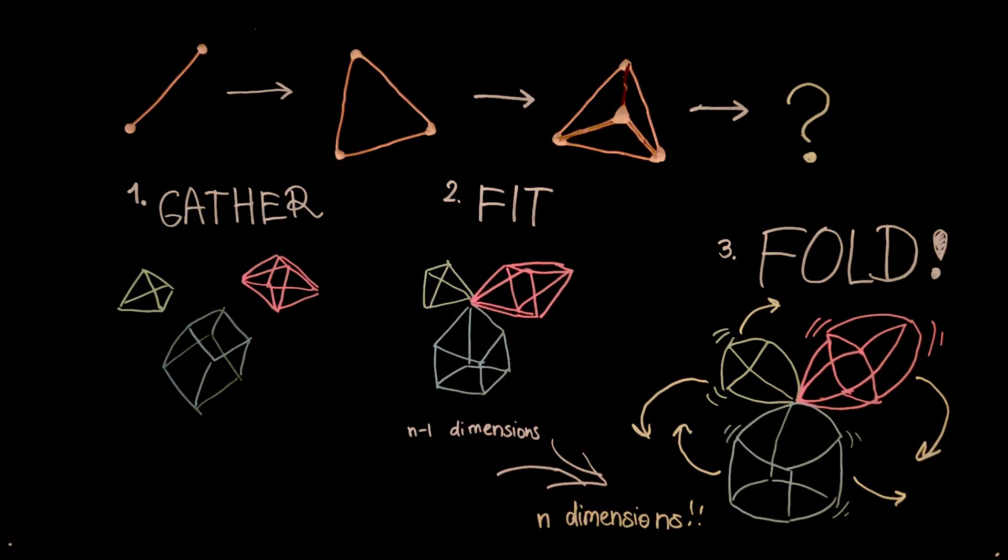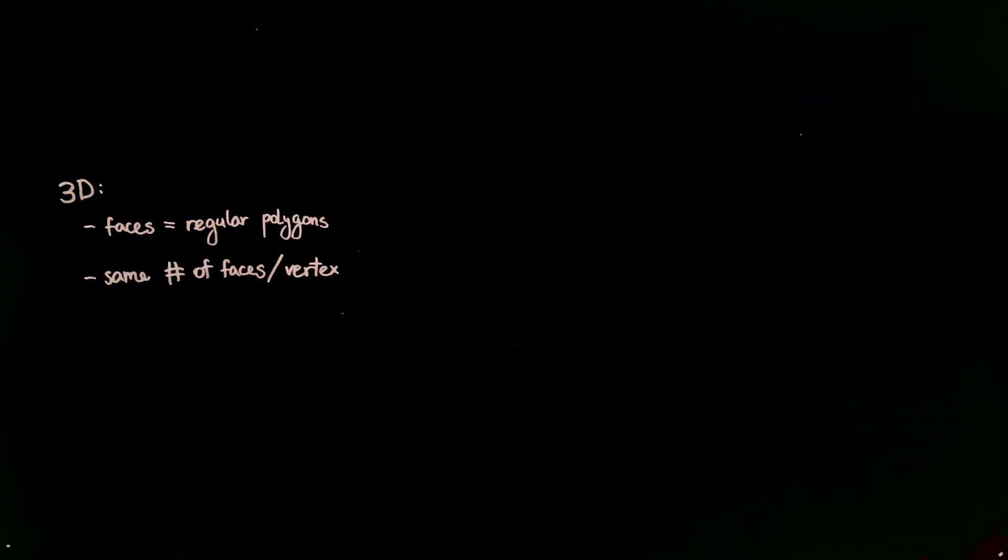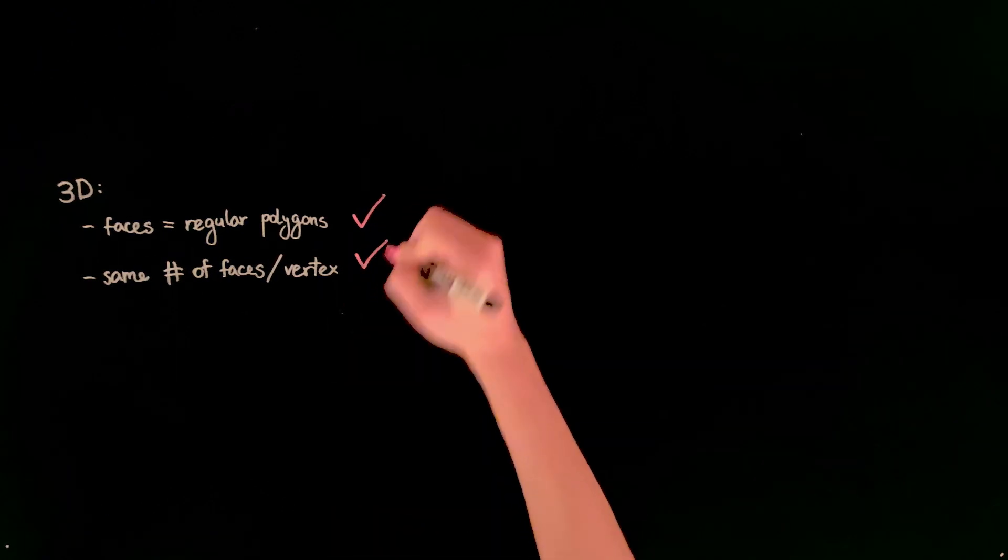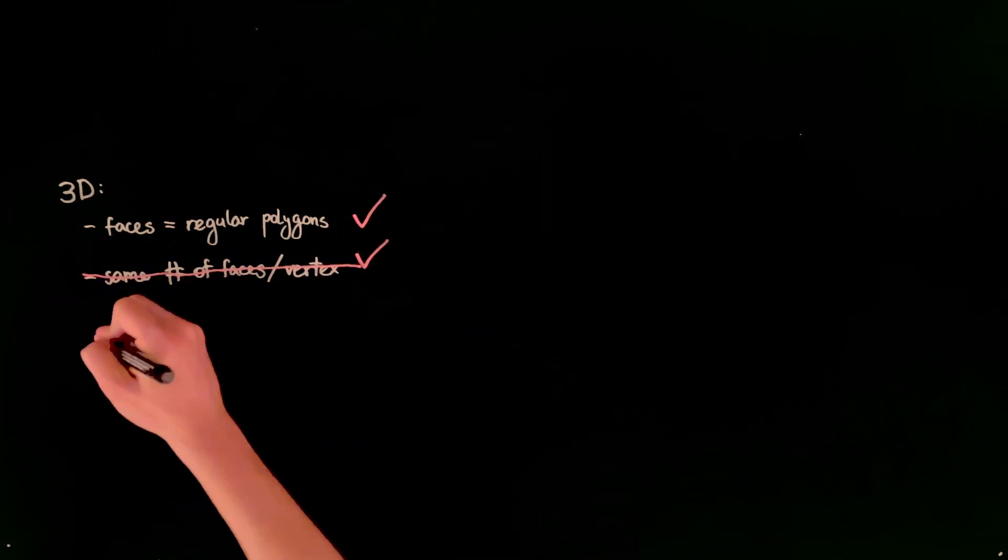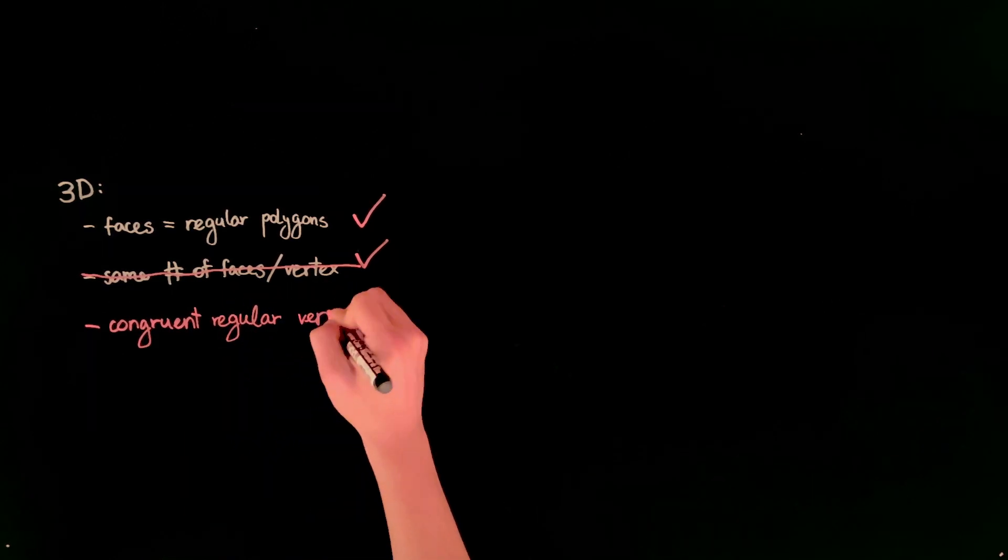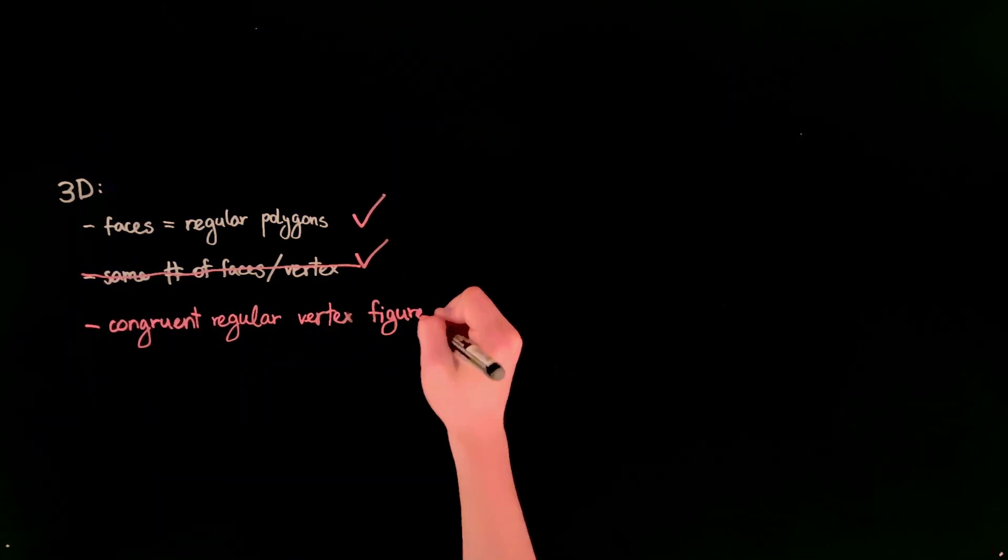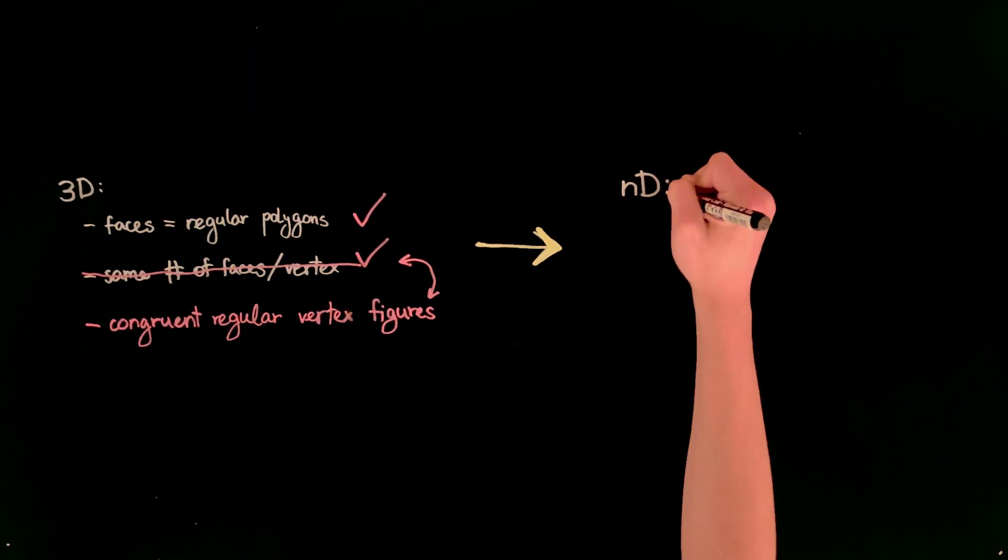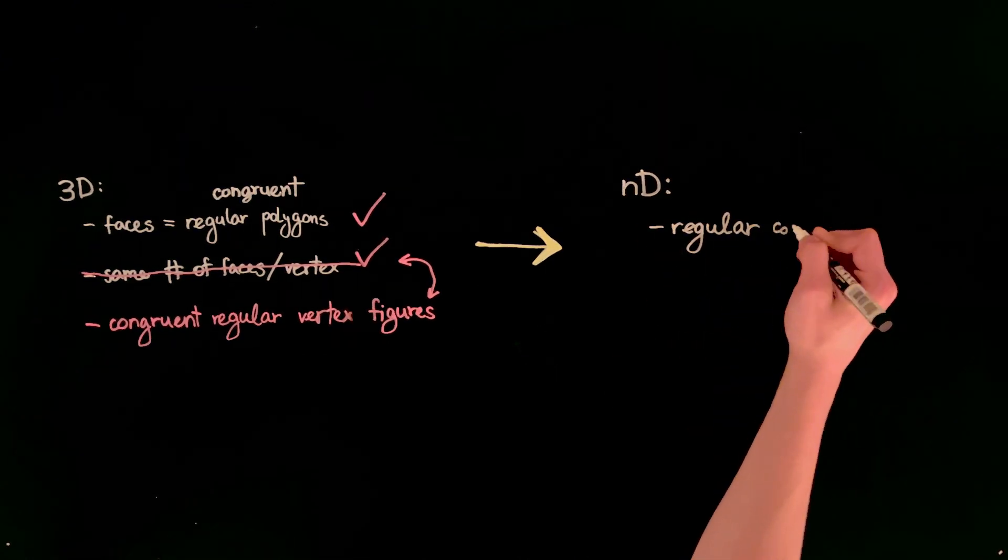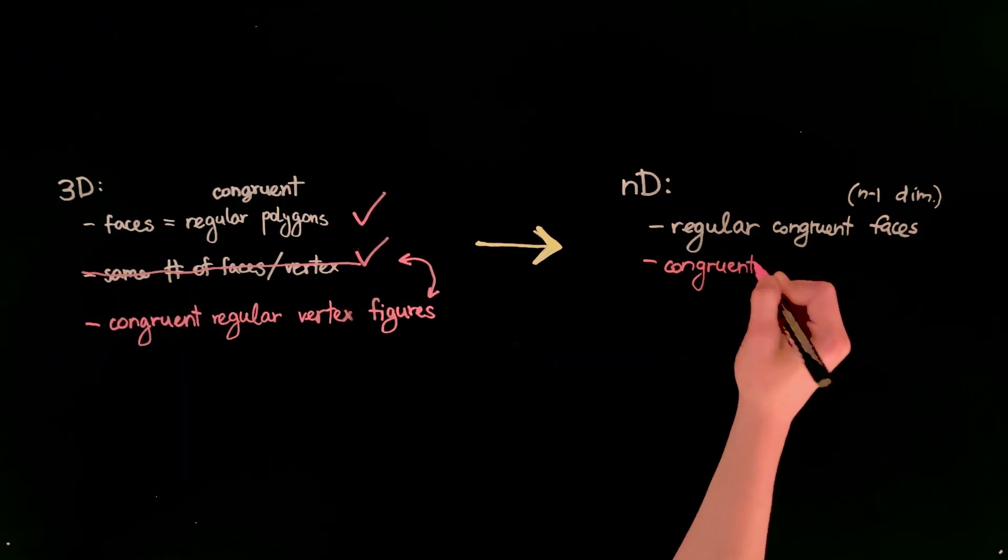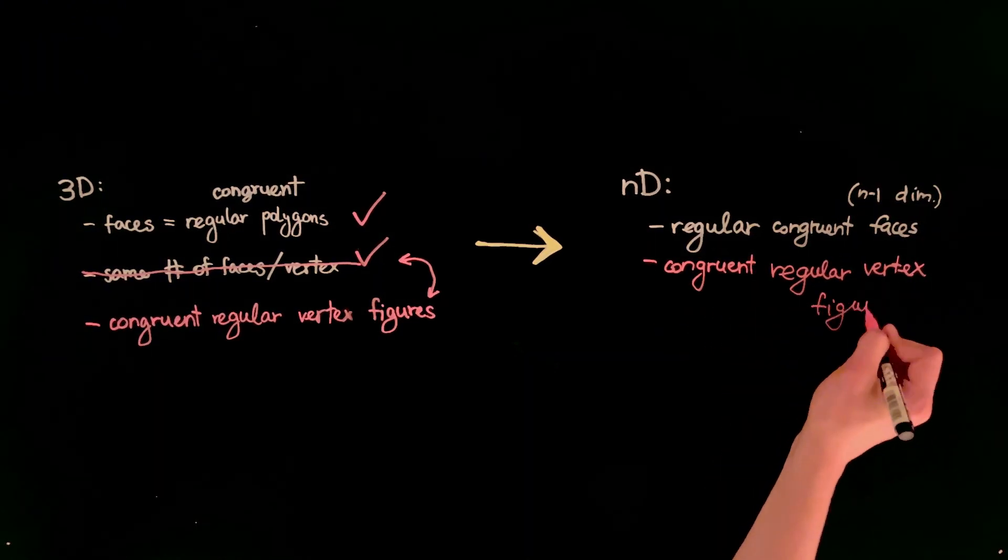Anyway, what makes a polytope regular? Platonic solids consist of congruent regular polygons with the same number of polygons per vertex. Moreover, the vertex figures of platonic solids, or the cardboard templates we've been using, are also congruent regular polygons. This definition extends nicely to higher dimensions. An n-dimensional polytope is regular if and only if all its n-1 dimensional faces are regular and congruent, and all its n-1 dimensional vertex figures are regular and congruent.